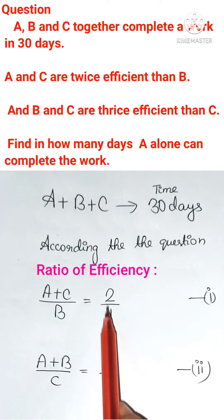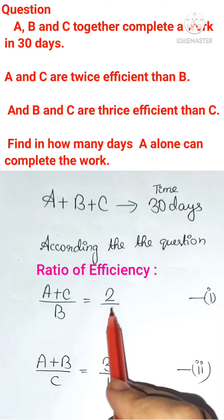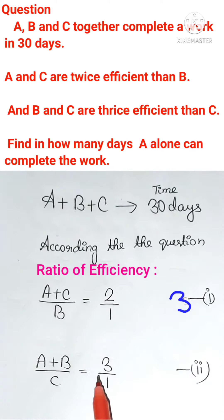So if we add these two values we will get the sum of A, B and C together. Here also we will get the sum of A, B and C together. But if we add here 2 plus 1 we will get here 3. But here if we add 3 plus 1 we will get 4. These two are different values. So we need to make it same.